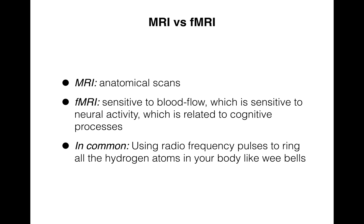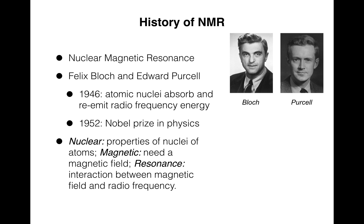The logical chain is that we want to detect where blood's flowing in the brain because that blood flow response is sensitive to where there's neural activity going on, which itself is related to the cognitive processes of interest to psychology and neuroscience researchers. The thing at the heart of all of this is that the scanner uses radiofrequency pulses to ring all the hydrogen atoms in your body like little bells, and then picks up on the ringing.